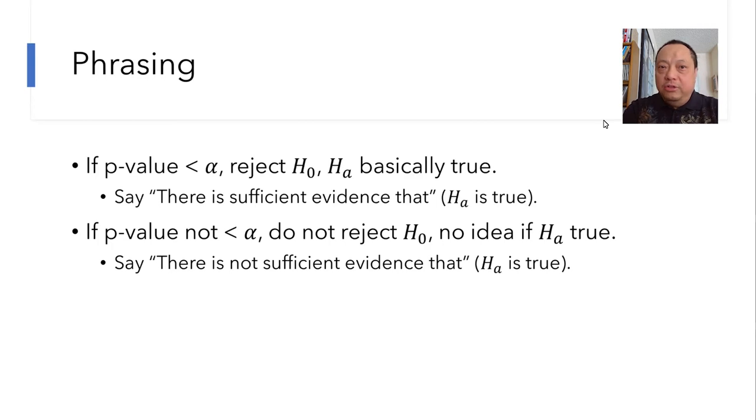We're not saying HA is false, we're not saying HA is true. We're just saying that the data is not sufficient to prove that HA is true. Also notice how all the not go together. P-value not less than alpha. We do not reject H0 and there is not sufficient data.